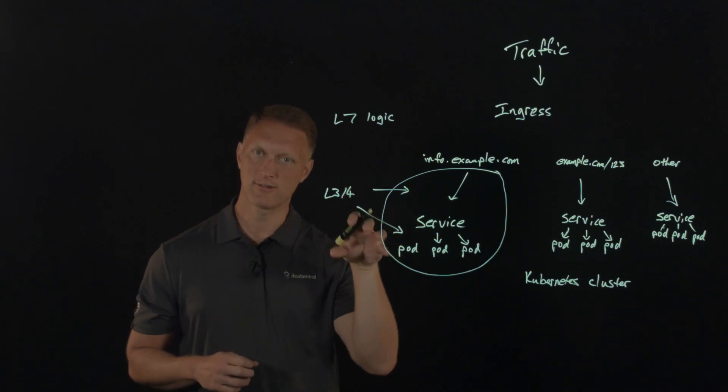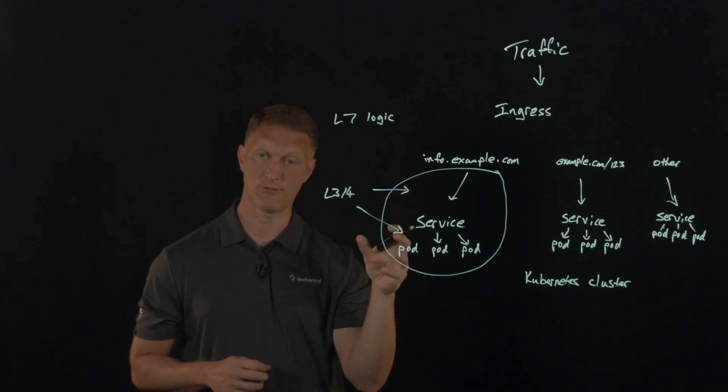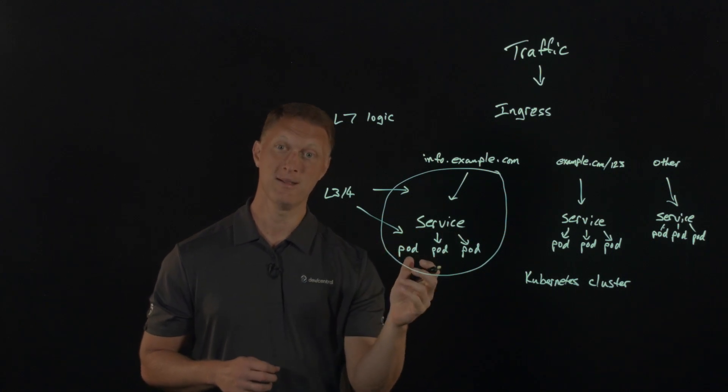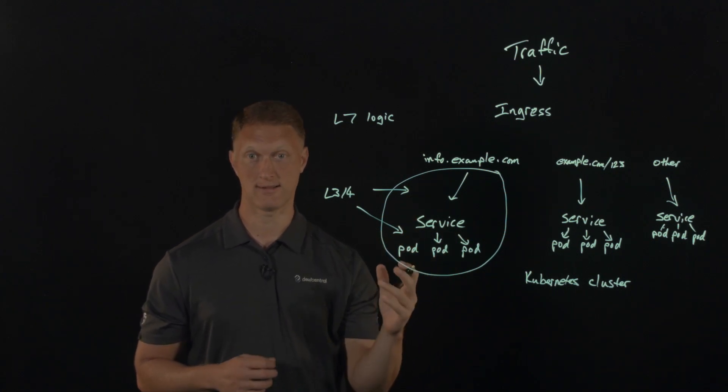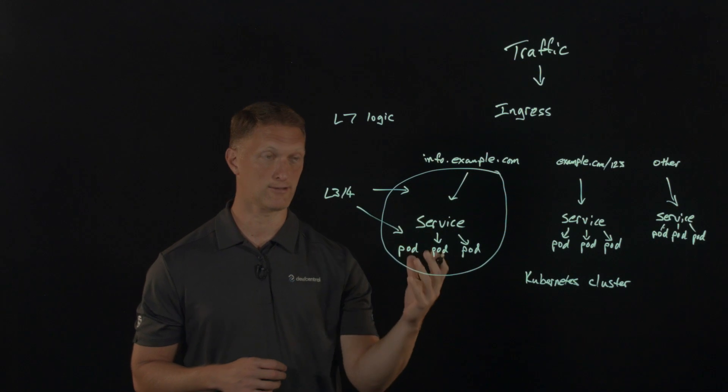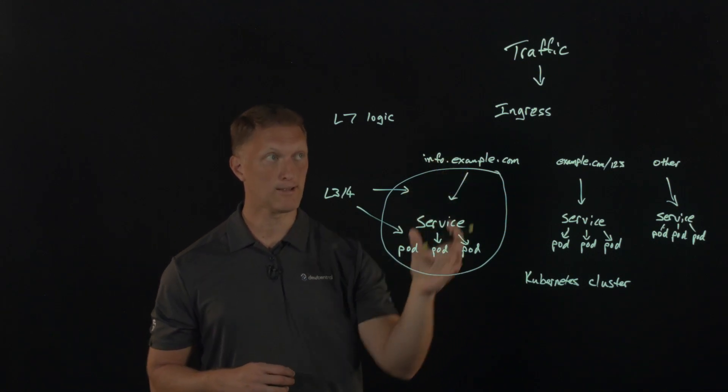The NGINX service mesh is focused on east-west traffic like sidecar traffic, but also north-south traffic like NGINX Kubernetes ingress controller, both ingress and egress.